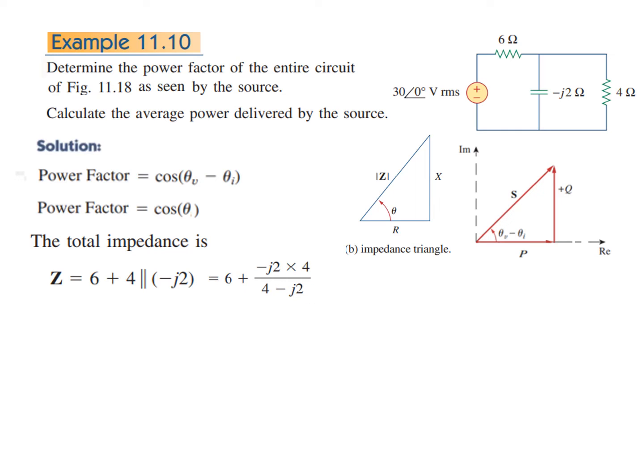Else you have to first convert this into polar, convert this also into polar, divide them, then convert them into rectangular and add them. So it is a slightly tedious process. Okay, so the answer will be 6.8 minus j1.6, which when converted into polar form will get the magnitude and the angle.